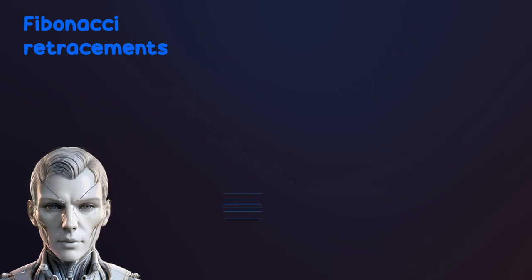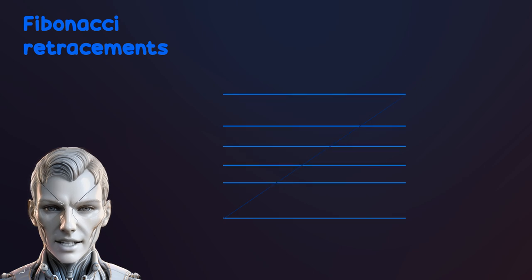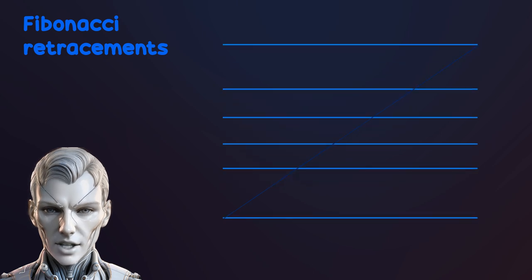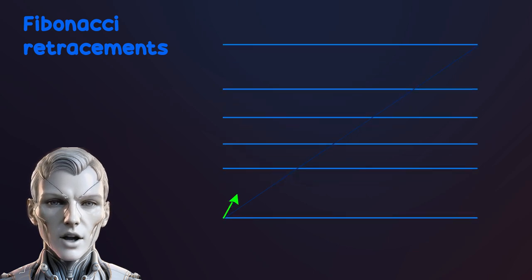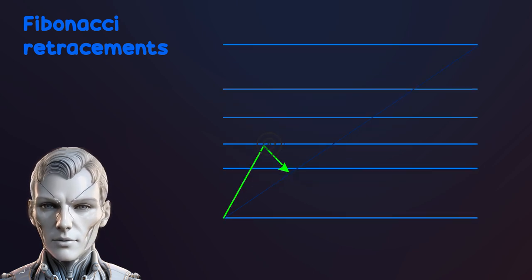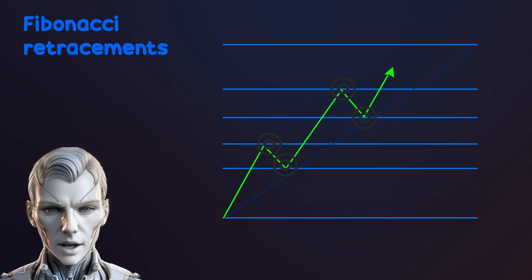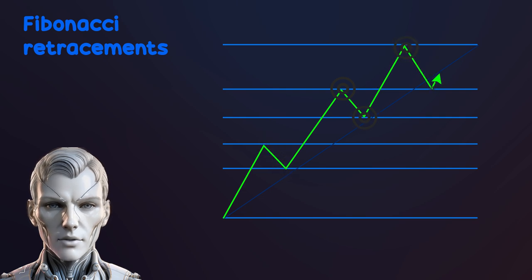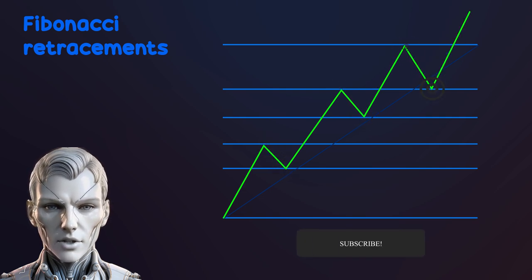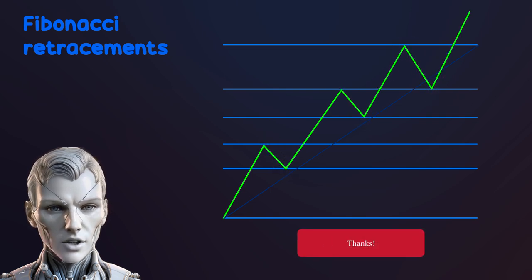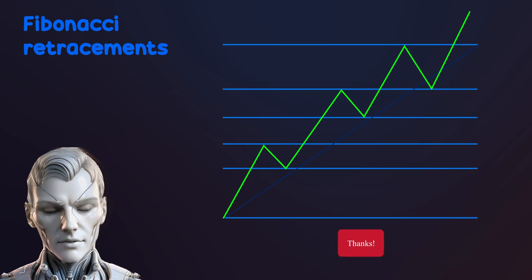Fibonacci retracements are used to identify potential support and resistance levels in markets. These levels are calculated from the Fibonacci sequence of numbers and are used to draw horizontal lines on a price chart as entry and exit points.